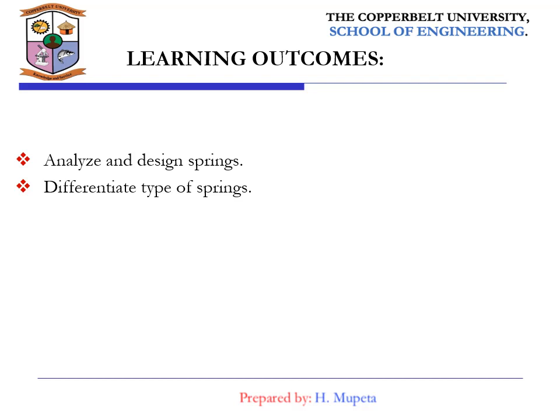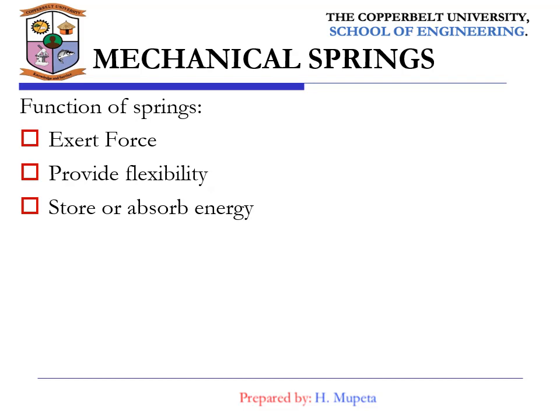The learning outcomes under this topic are: number one, we are going to analyze and design springs; and then we are going to differentiate the different types of springs available. In general, springs may be classified as wire springs, flat springs, or special shaped springs.